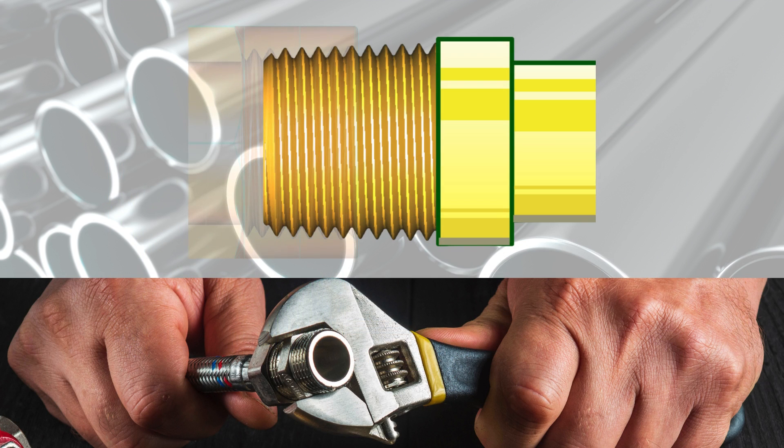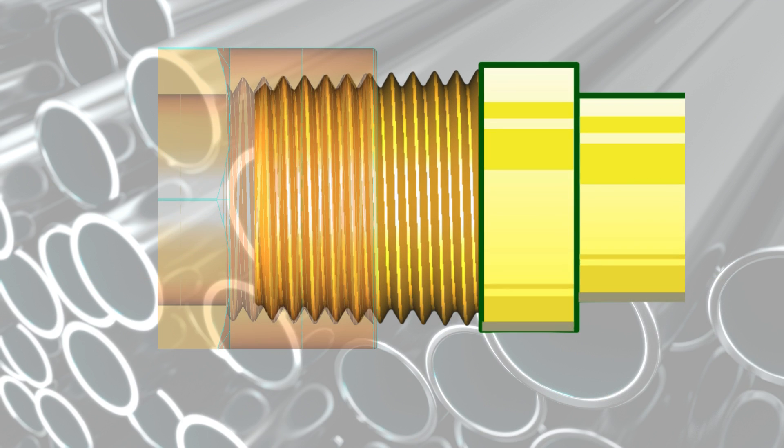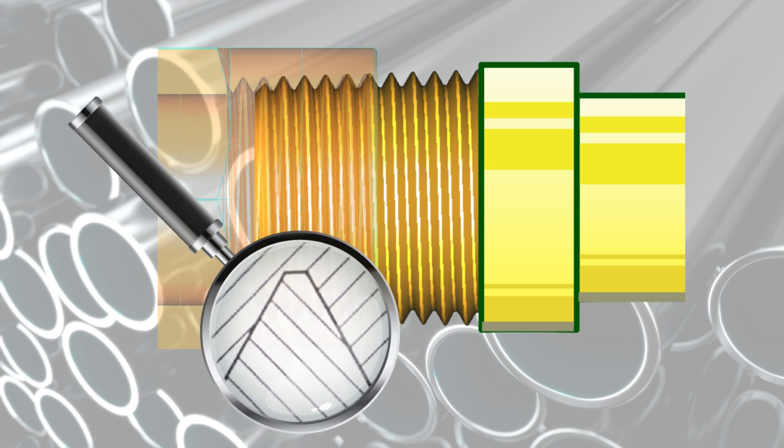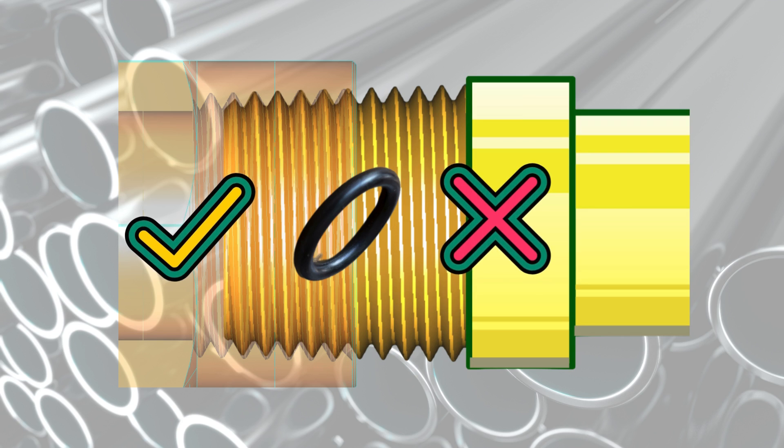The taper on NPT threads allows them to form a seal when torqued, as the flanks of the external and internal threads compress against each other. No clearance remains between the crests and roots of the threads because of the taper. Depending on the application, it can be used with or without a sealant.